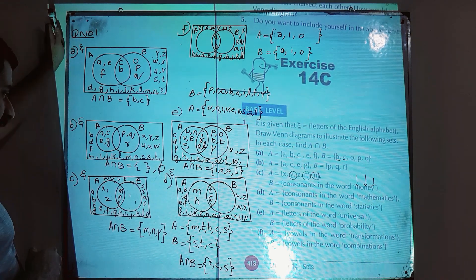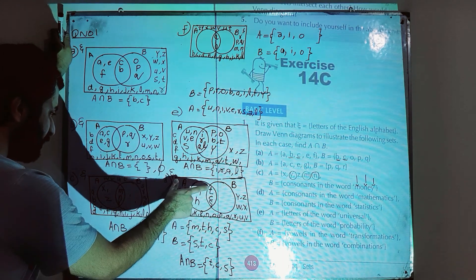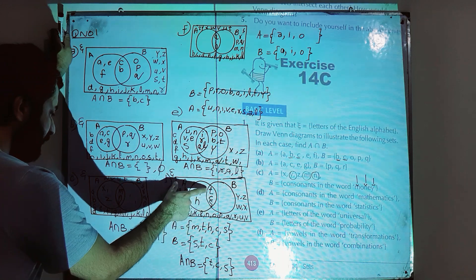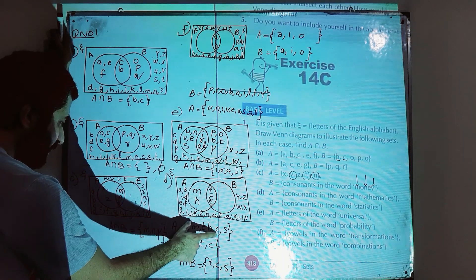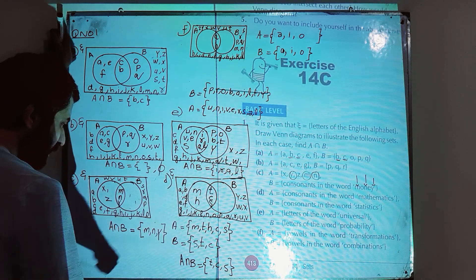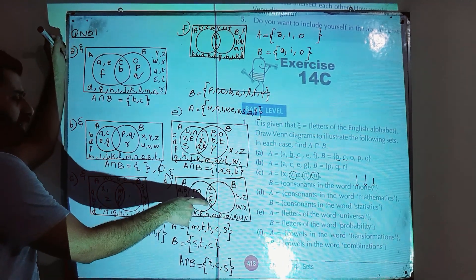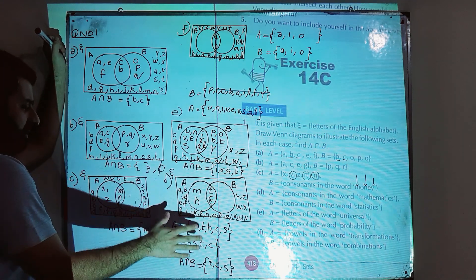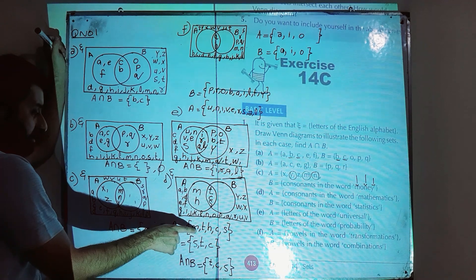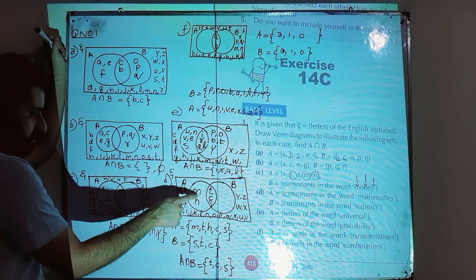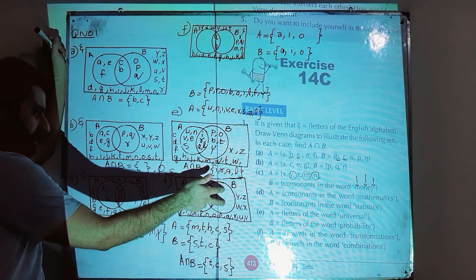Inside the rectangle we have circles A and B. We fill the overlapping part first with elements common to both sets. From sets A and B, c is present in both, t is present in both, and s is present in both. So t, c, and s are written in the common overlapping part. The remaining elements of A — m and h — are written in the region only belonging to A. Set B has no elements outside the overlap, so that section is empty.